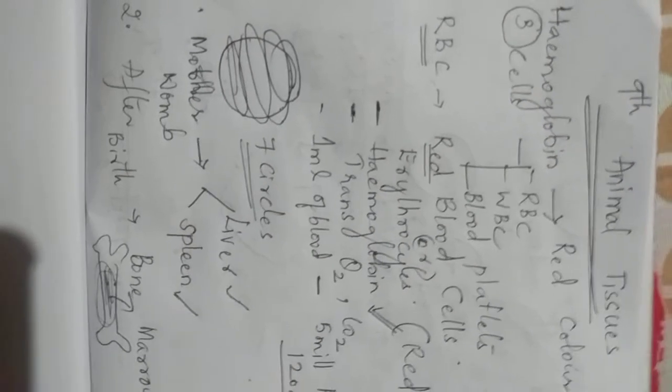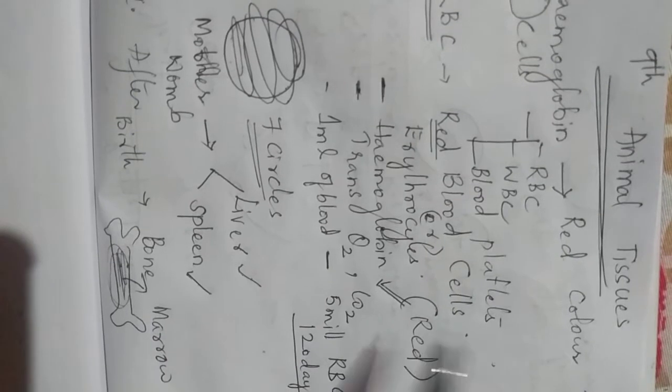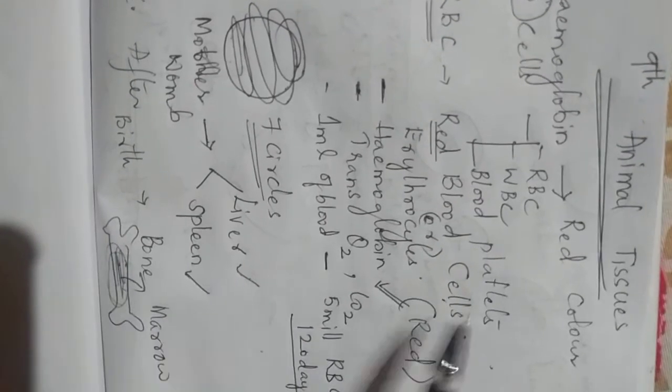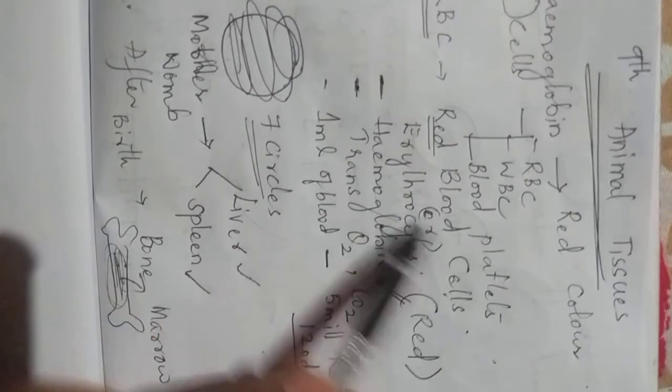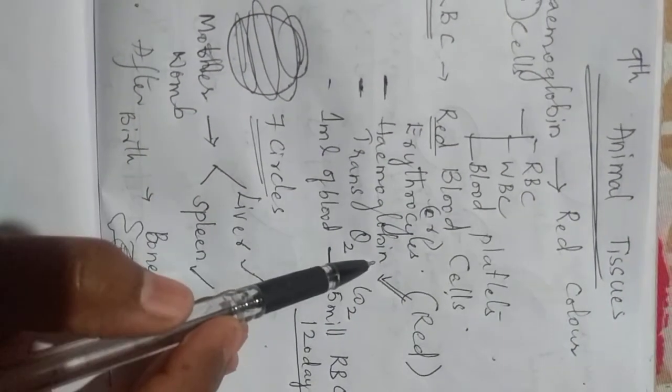So how many types of cells are there in blood? Three cells: RBC, WBC, blood platelets. And we have seen about RBC today. That is red blood cells. They are also called as erythrocytes. They are red in color because of presence of hemoglobin. It is a protein.